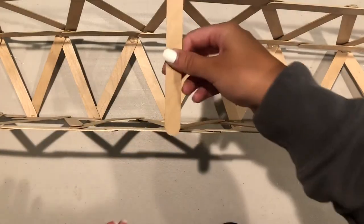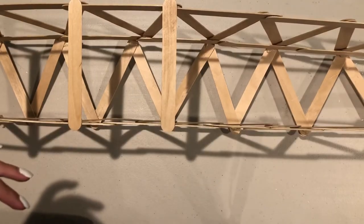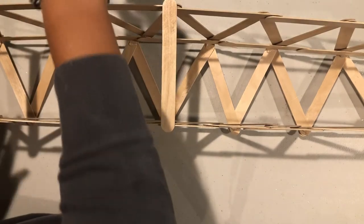Now flip your bridge over so that we can add supports across this way. Continue gluing all the way down just like this.